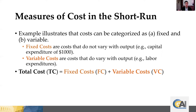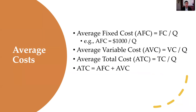Total cost is the summation of fixed cost and variable cost of labor. We can represent cost in the short run as two components: fixed and variable. The fixed component captures the input that doesn't change — in this case capital, at $1,000. Variable costs are those that change with output — here, that's labor. When you have totals, you can compute averages by dividing by Q. Average fixed cost, average variable cost, and average total cost — and the sum of AFC plus AVC equals average total cost.